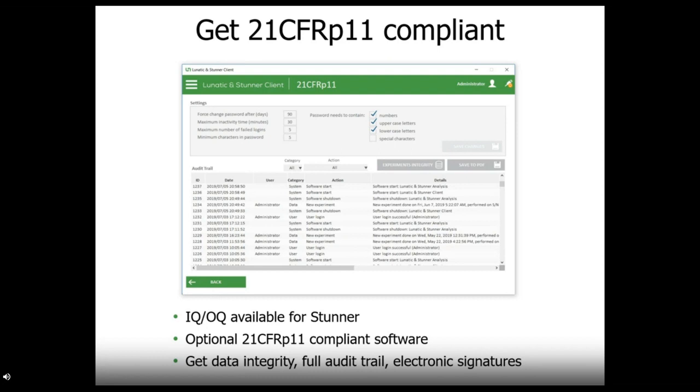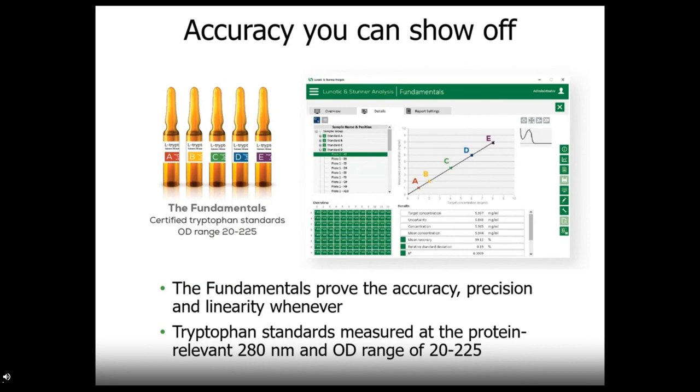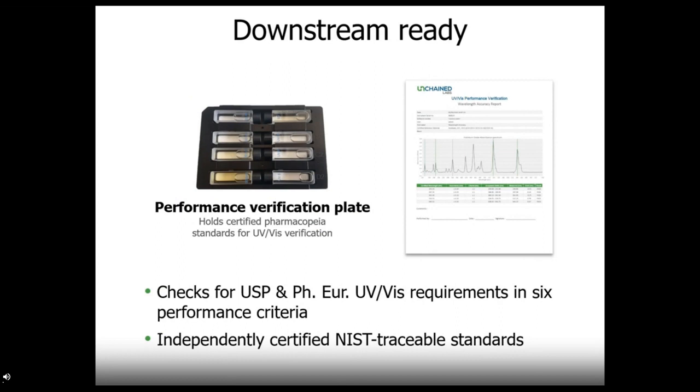We offer IQ OQ services and Stunner software is 21 CFR Part 11 compliant with full audit trail and electronic signature capabilities to help you achieve full integrity on your experiments and reports. And Stunner has shocking accuracy and wants to prove it. Using the fundamental strip-to-fan standards, the accuracy, precision, and linearity of the instrument can be proven at any time. At the protein-relevant 280 nanometer wavelength, OD ranges from 20 to 225. Be confident about every sample with data that leaves no room for doubt. And the features don't stop there. If you would like to move Stunner downstream, we also have a performance certification. These tests with certified cuvettes meet the United States Pharmacopeia and European Pharmacopeia guidelines for UV-Vis spectrometers. The tests and all necessary calculations are handled automatically by the software.